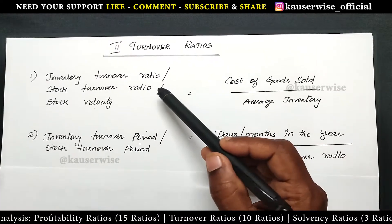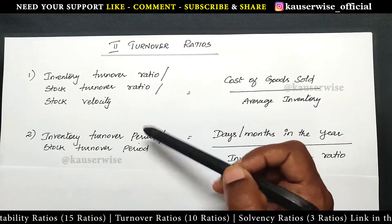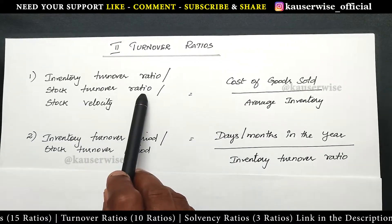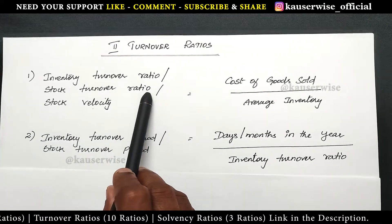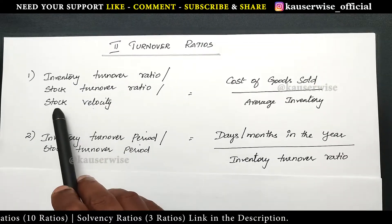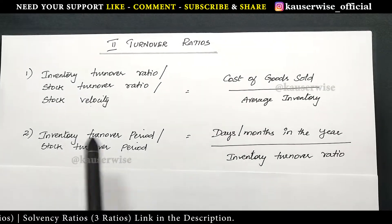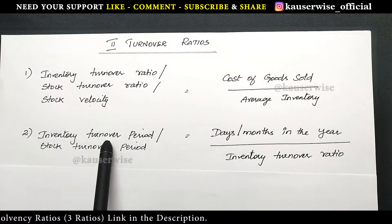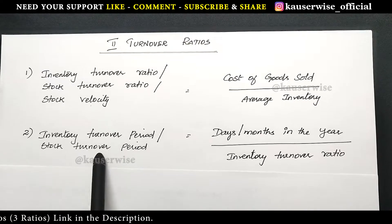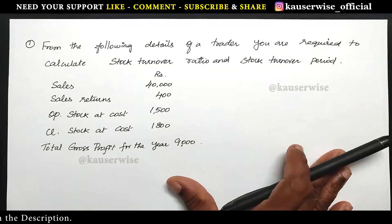In that, first we are going to see two different calculations. Number one: stock turnover ratio, otherwise called as inventory turnover ratio or stock velocity. Number two: inventory turnover period or stock turnover period. Now let's see the problem.